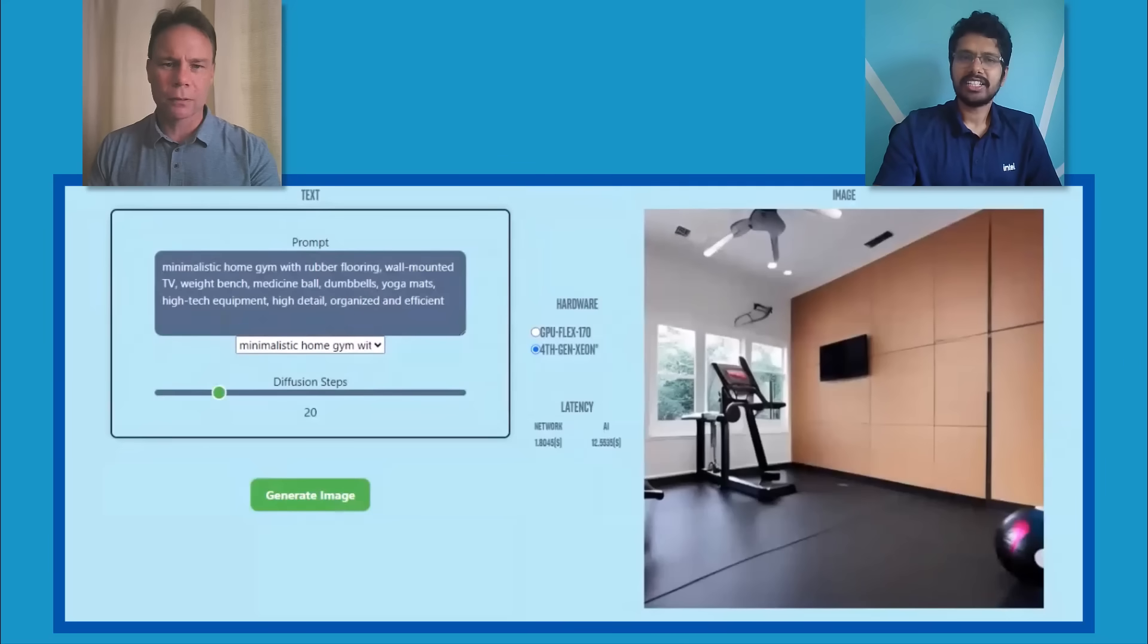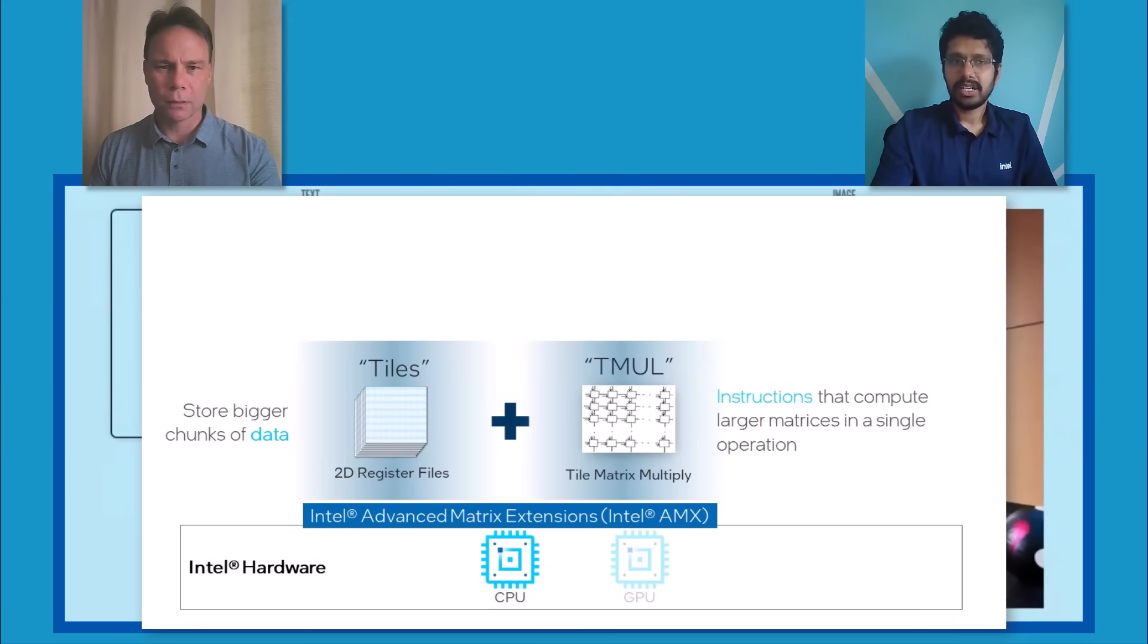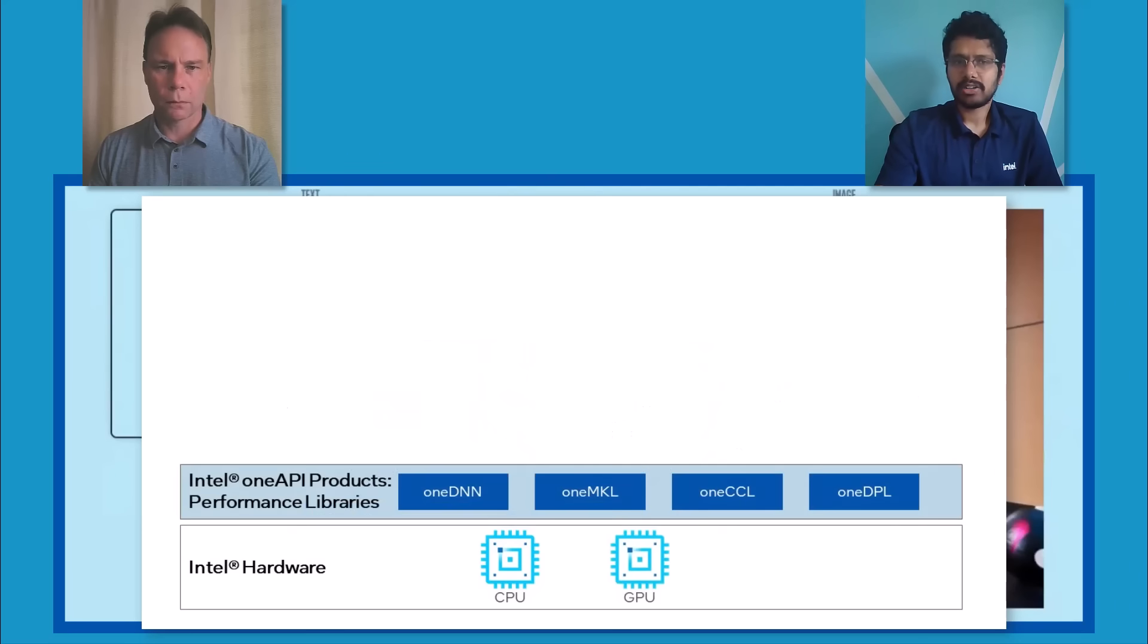It is a combination of the hardware and software. The 4th generation Intel Xeon has AMX built-in, which is an accelerator that provides performance for deep learning workloads. And the software stack gets the most out of these hardware features and instruction sets. Intel contributes optimizations to open source AI frameworks like PyTorch and TensorFlow.